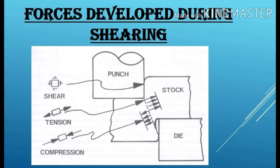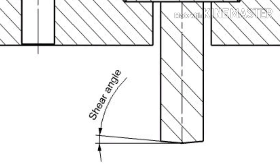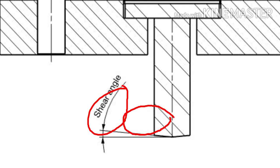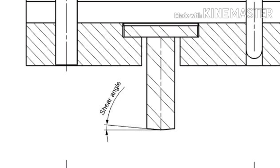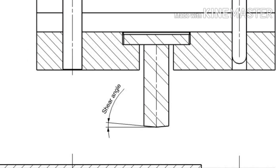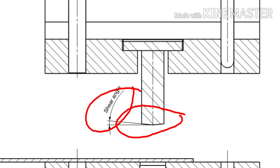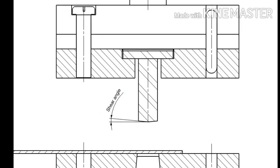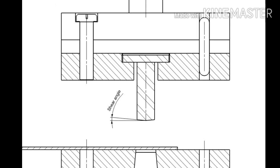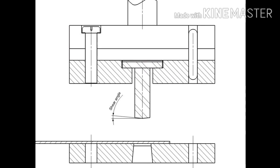Now we are going to see the methods of reducing press force. Practically in some cases, it would be necessary to reduce the cutting force to prevent press overloading. A method to reduce the press force is to grind the face of a punch or die at a small shear angle with reference to the horizontal plane, as you can see in the image. This reduces the area of contact during shear at any one time. Providing shear angle also reduces the shock to the press and smoothens out the cutting operation. The shear angle should provide a change in punch length from 1 to 1.5 times the sheet thickness.